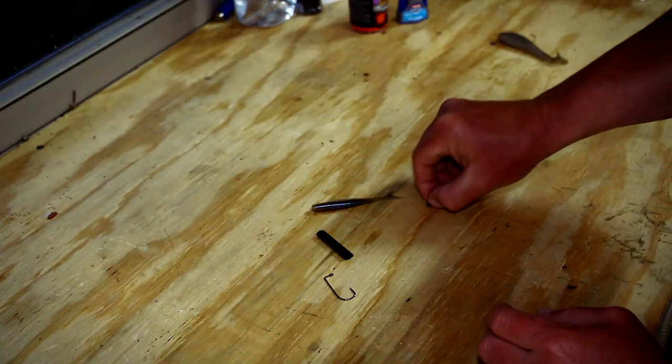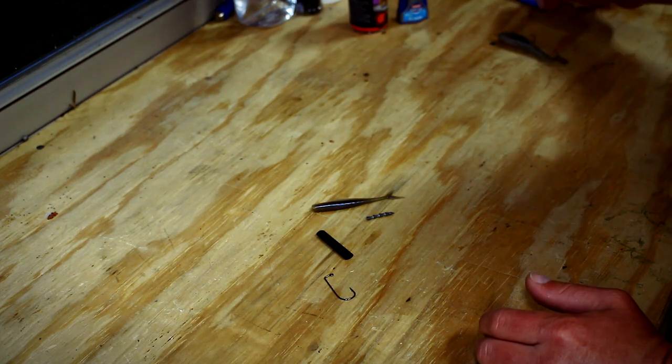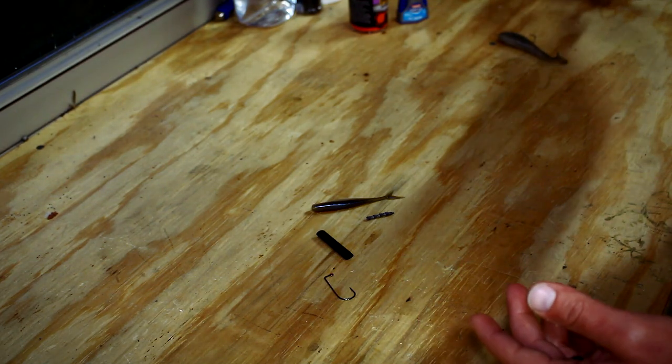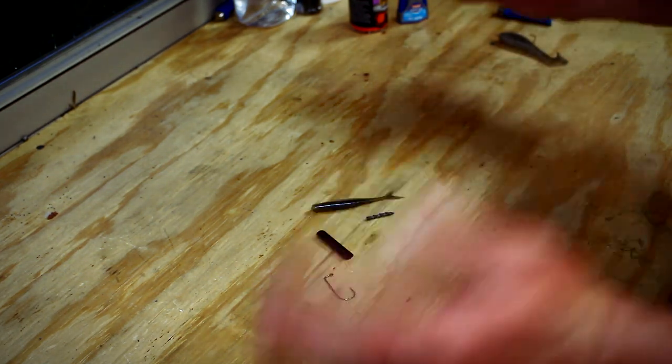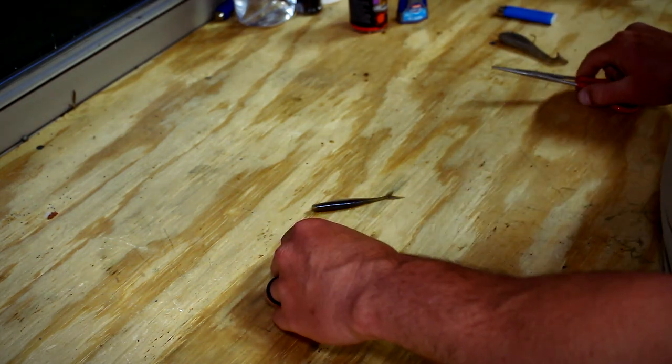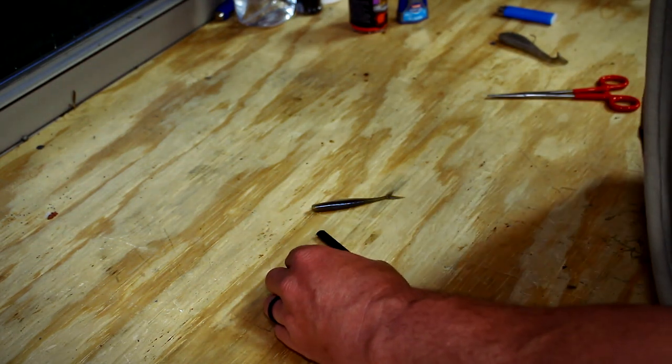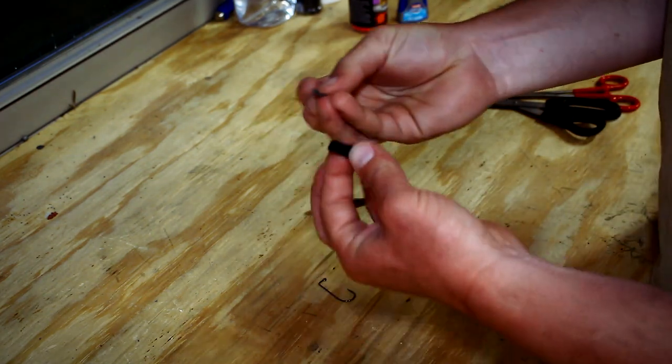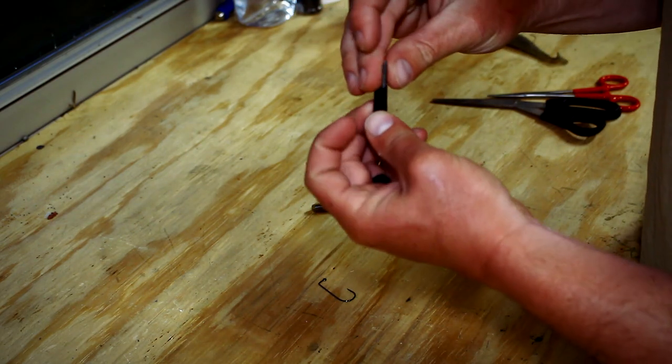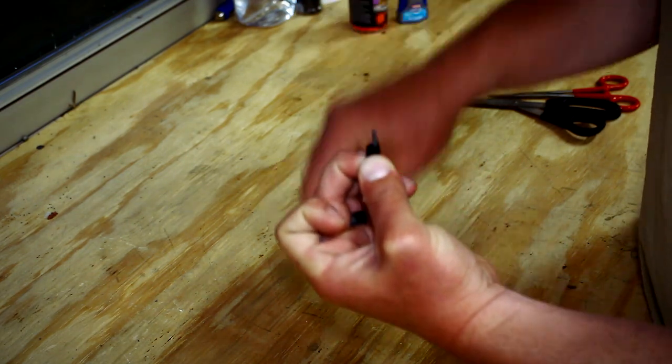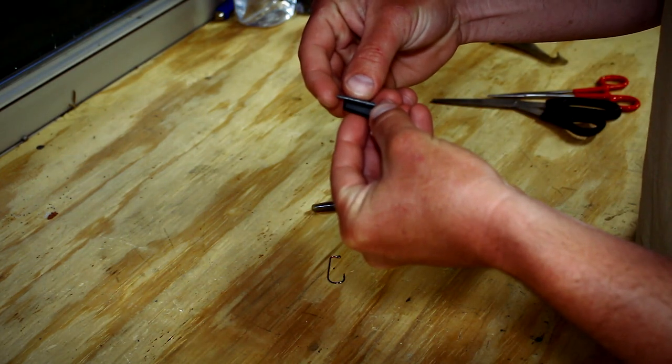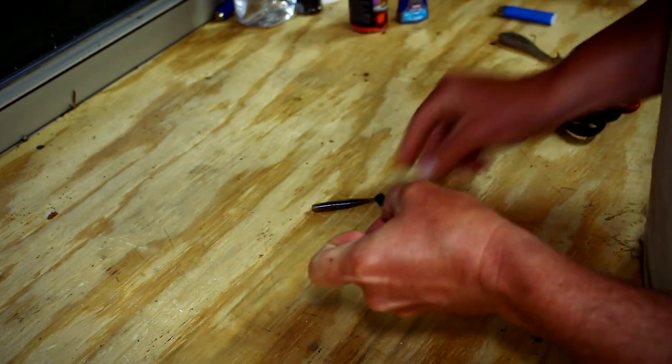All right guys, we're gonna go ahead and hop into this. You'll need either a lighter or a heat gun. I actually have a heat gun over here so I'll be using that for this video. It is very simple. You're going to take your nail weight right here, get your shrink wrap, and you want the shrink wrap about three quarters of the length of the nail weight. Cut that pretty straight.